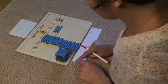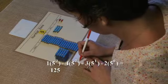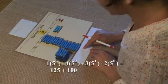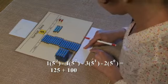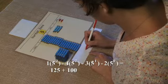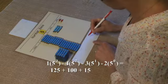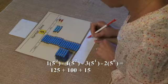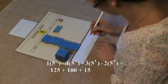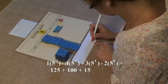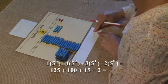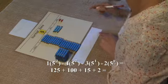So we have 5 cubed, which is equal to 125. And we're adding 4 times 5 squared, which is equal to 100. We're adding 3 times 5 to the first, and that's equal to 15. And then we're adding 2 times 5 to the zero power, which is 2.